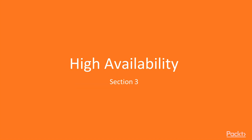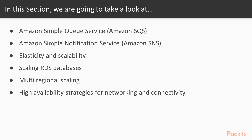Hi guys and welcome to section 3 of this course where we'll be looking at High Availability. In this section we'll be looking at the Amazon Simple Queue Service, Amazon Simple Notification Service, Elasticity and Scalability, Scaling RDS Databases, Multi-Regional Scaling and High Availability Strategies for Networking and Connectivity.